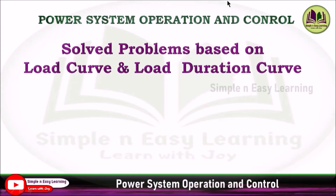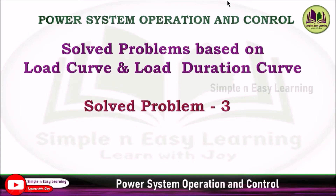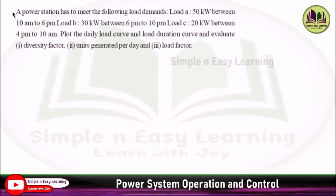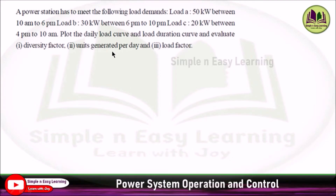Solved problems based on load curve and load duration curve. Problem number 3. A power station has to meet the following load demands: Load A 50 kilowatt between 10 am to 6 pm, Load B 30 kilowatt between 6 pm to 10 pm, Load C 20 kilowatt between 4 pm to 10 am. Plot the daily load curve and load duration curve and evaluate diversity factor, units generated per day, and load factor.